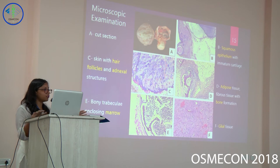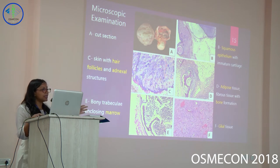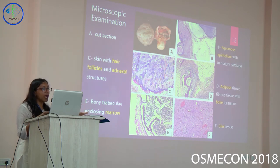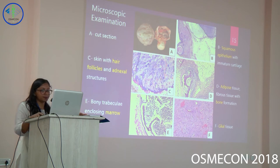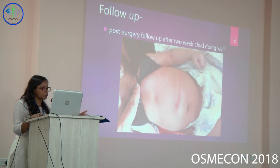On microscopic examination, image B shows squamous epithelium with few immature cartilage. C shows skin with hair follicles and adnexal structures. D shows adipose tissue and fibrous tissue with bone formations. There are bony trabeculae enclosing marrow elements and glial tissues. The presence of all these elements confirms that it is a teratoma.